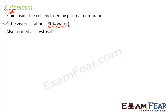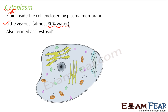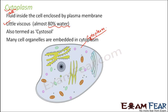Cytoplasm is also termed cytosol — just another name, because it is like a cytosolution. If you look at animal cells, this entire fluid present inside the cell is cytoplasm, and in it are present all the different cell organelles. It is like a fluid in which different organelles are floating, and many cell organelles are embedded in the cytoplasm at specific locations.